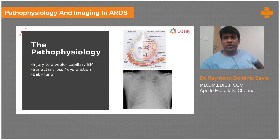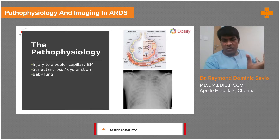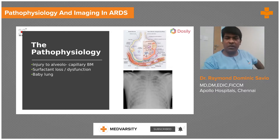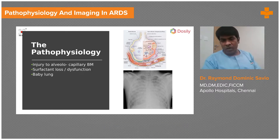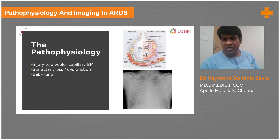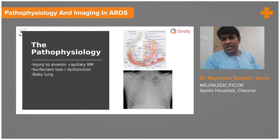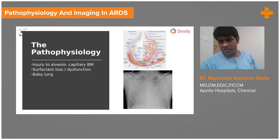The end result of all this is surfactant dysfunction. Surfactant is very important to hold your alveolus open and prevent it from collapsing. Once you have surfactant dysfunction, all your alveoli collapse and your surface area for oxygenation is reduced. This is what we call a shunt — you do not have gas entering the alveolus either because it's flooded or collapsed, whereas perfusion is preserved. Shunt leads to hypoxia in ARDS.